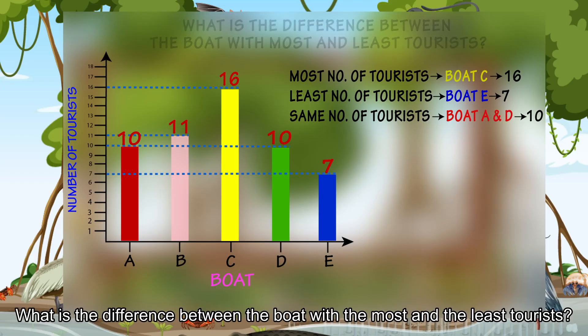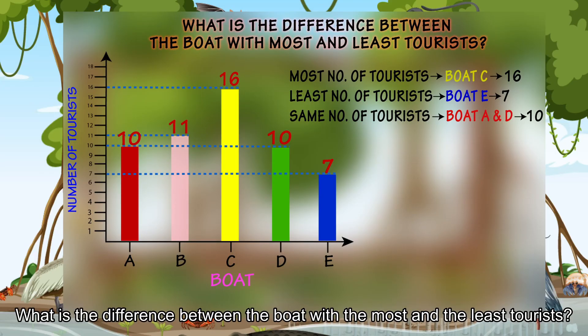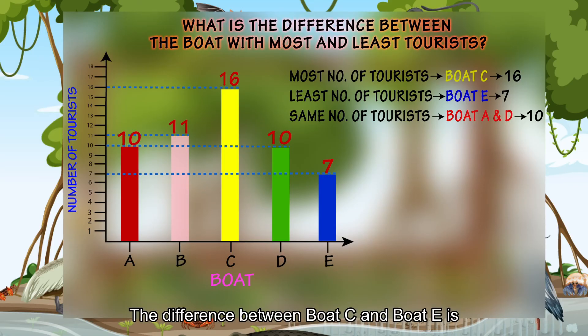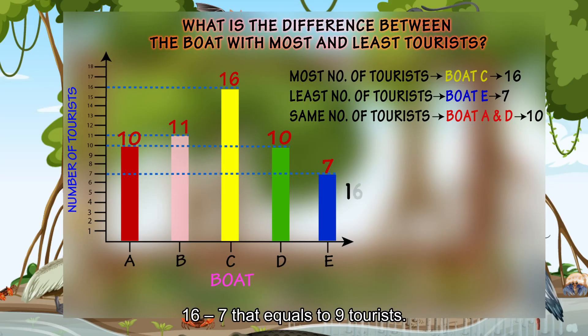What is the difference between the boat with the most and the least tourists? The difference between Boat C and Boat E is 16 minus seven. That equals nine tourists.